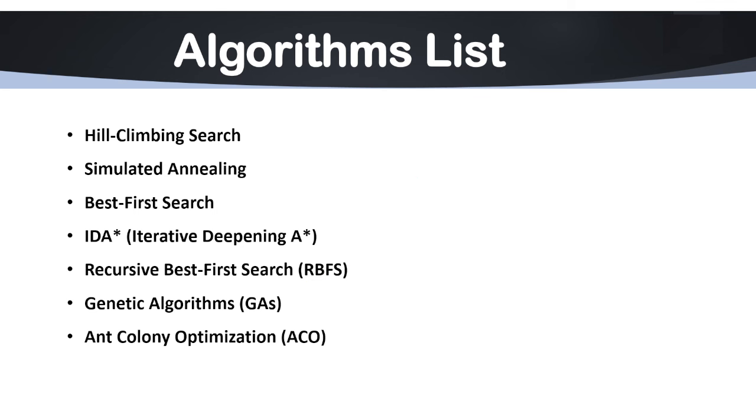Another algorithm is genetic algorithms (GAs). This heuristic search is inspired by biological evolution. Genetic algorithms evolve solutions by applying operations like selection, crossover, and mutation. Its steps are initialization, selection, crossover, and mutation.